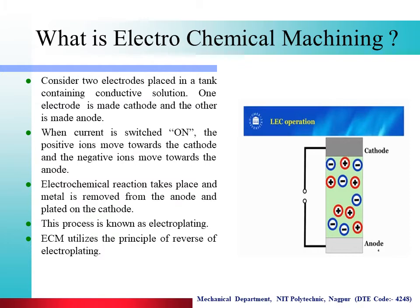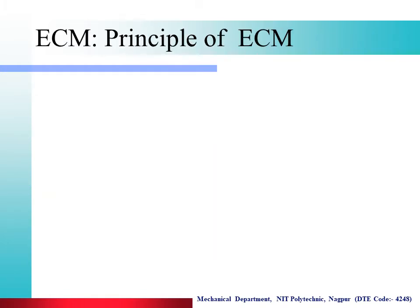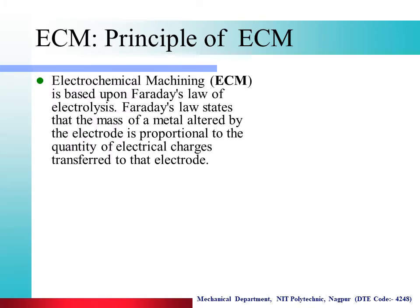ECM utilizes the principle of the reverse of electroplating. In ECM, the process works on the reverse of electroplating principle, but in the ECM process, metal is not deposited on the cathode. In ECM, metal is only removed from the anode and the electrolyte solution prevents it from depositing on the cathode. Electrochemical machining is based upon Faraday's law of electrolysis, which states that the mass of metal altered by the electrode is proportional to the quantity of electrical charges transferred to the electrode.